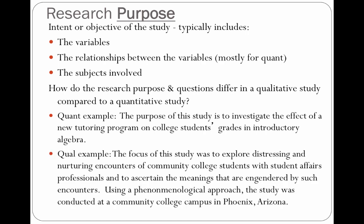For a qualitative purpose statement, those are typically more verbose and open-ended to allow for more exploration of themes that emerge during the study. Here's an example: 'The focus of this study was to explore distressing and nurturing encounters of community college students with student affairs professionals, and to ascertain the meaning engendered by such encounters. Using a phenomenological approach, the study was conducted at a community college in Phoenix, Arizona.' The variables of interest are broader — the interactions and encounters between community college students and student affairs professionals — and trying to define and understand those encounters. It's very clear who the subjects will be: community college students and student affairs professionals at a college in Phoenix, Arizona.